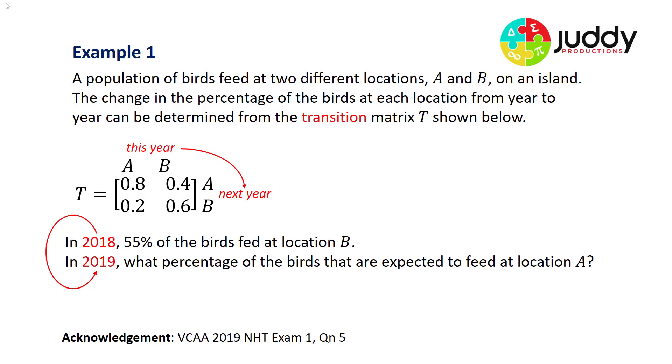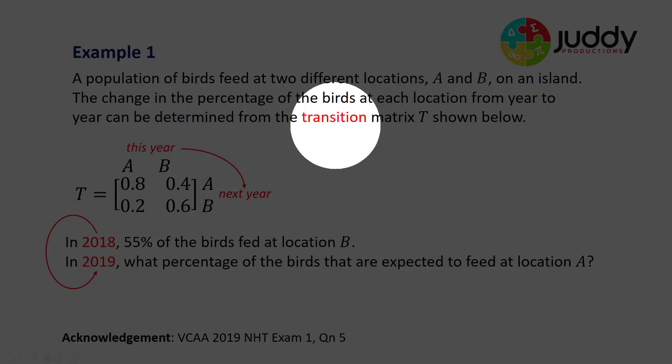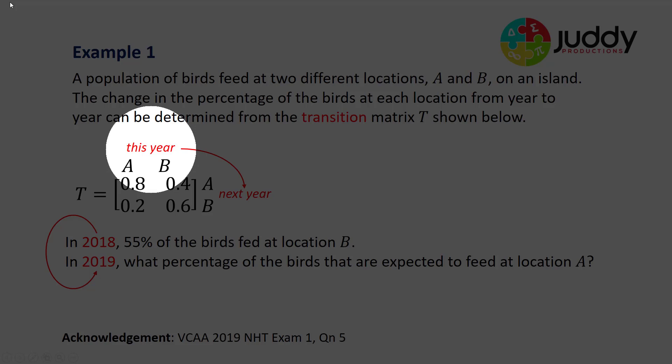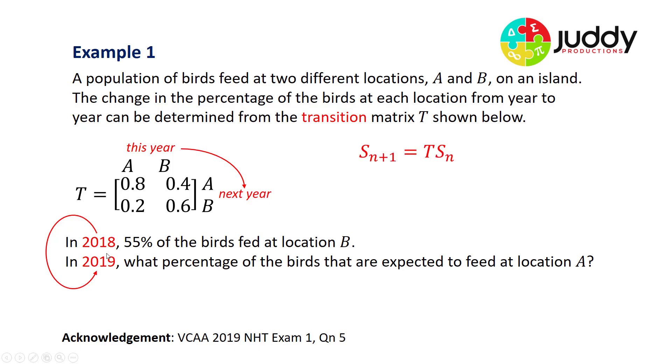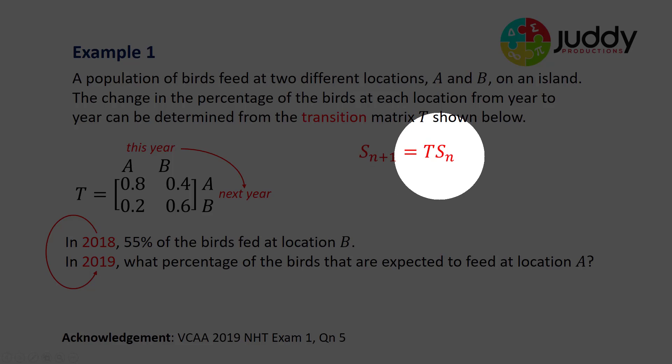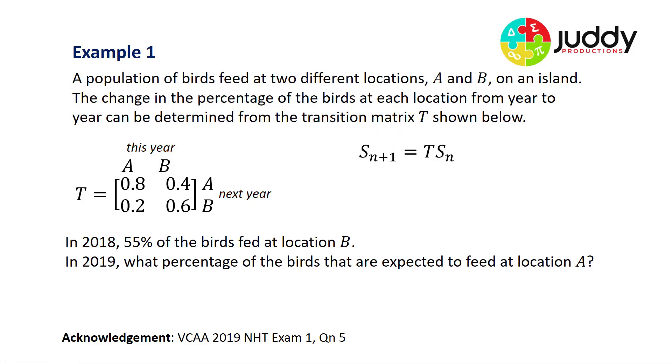First of all, this is clearly a transition matrix. We've been given the word transition, we can see there's a transition in our transition matrix from this year to next year, and in the data we've been given you can see there's a transition from 2018 to 2019. So here's our transition recurrence relation: the next state is equal to the previous state multiplied by the transition matrix. Let's fill that in. First we substitute in the value for T, the transition matrix.